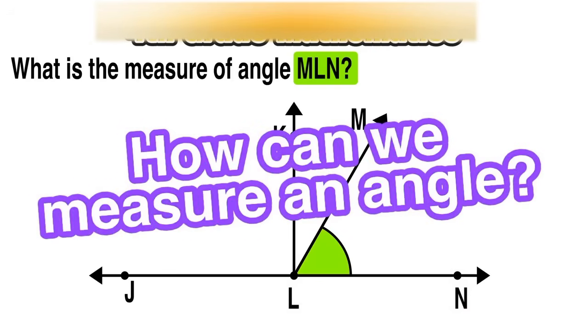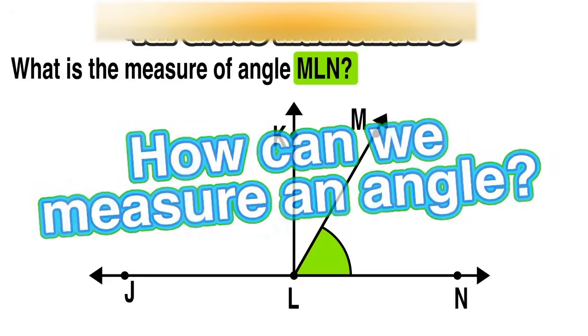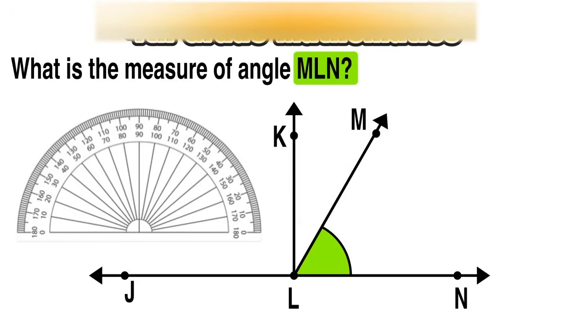Without any numbers or angle measurements given to us on the diagram, we need to ask the question: how can we measure an angle? In our geometry toolbox we have a protractor, which are commonly used by students as ninja throwing stars, but they can actually also be used to find angle measurements.